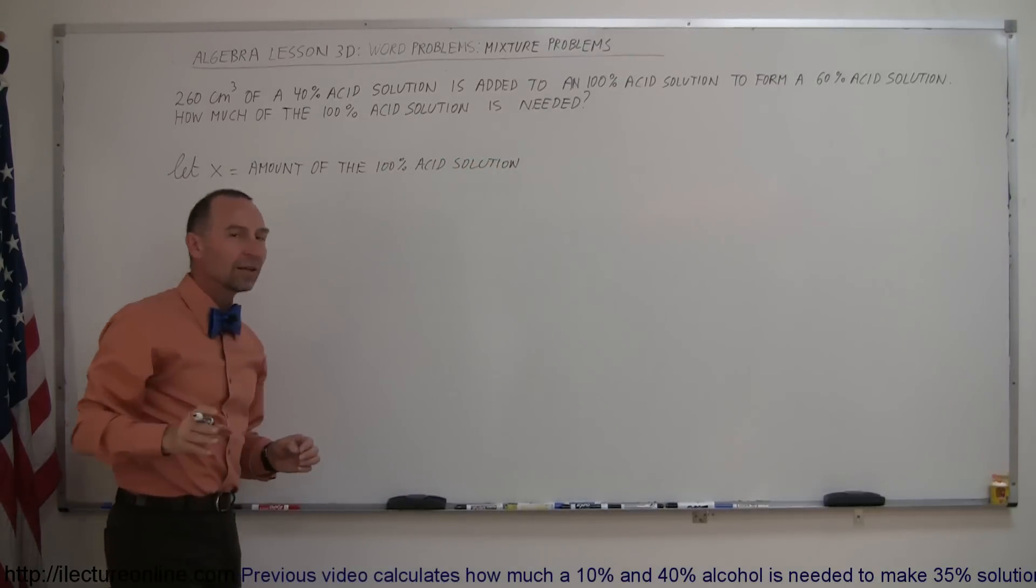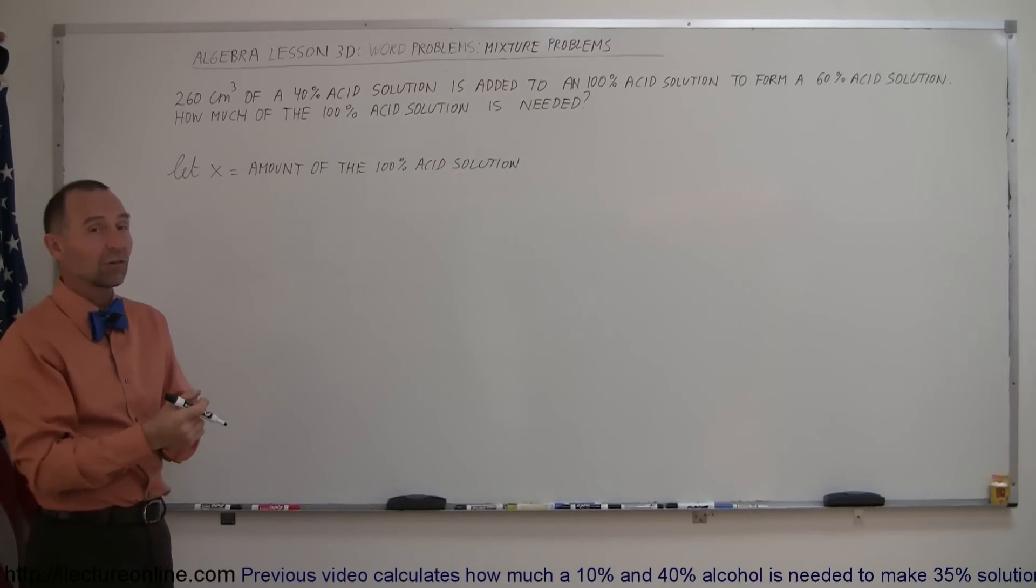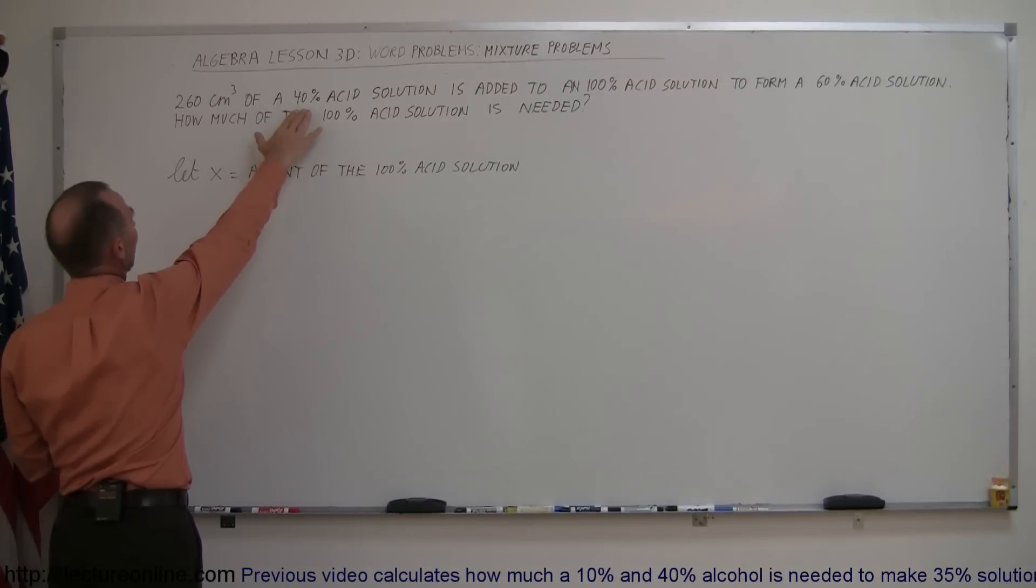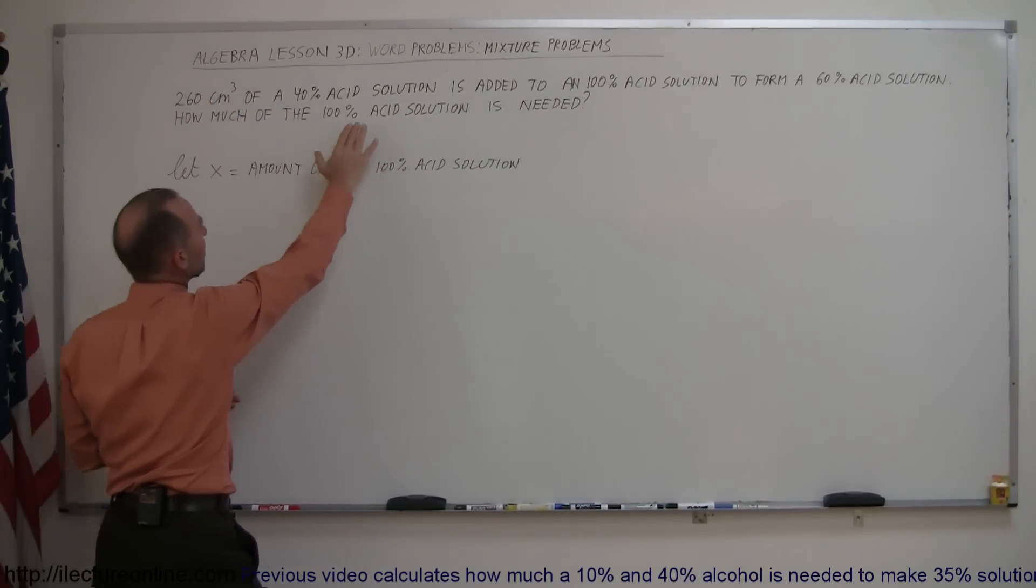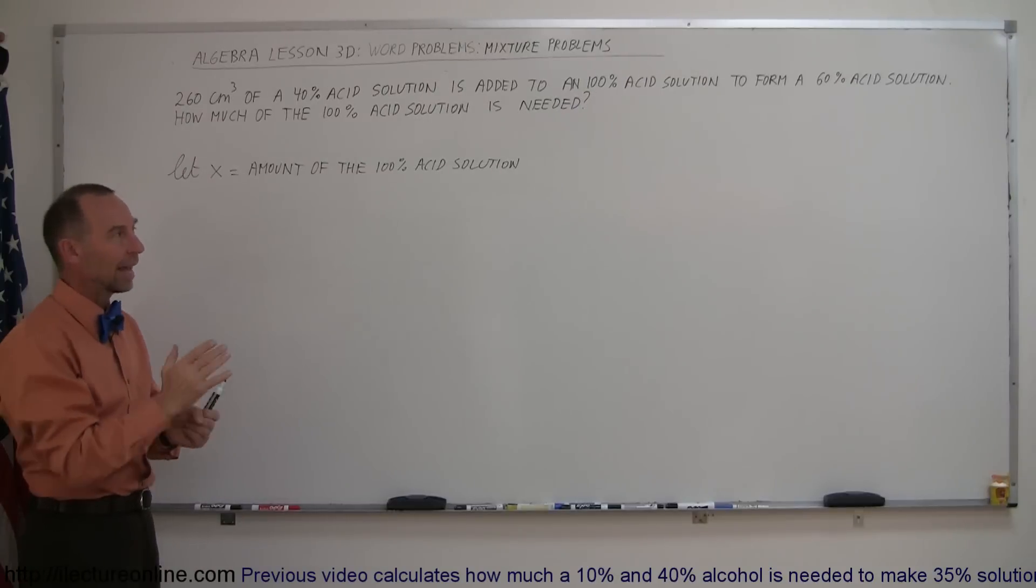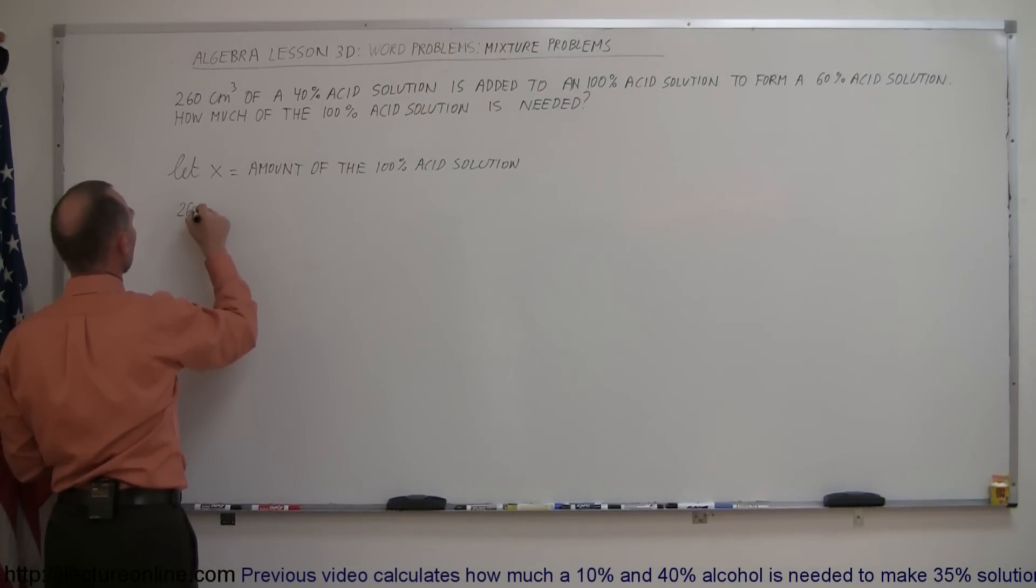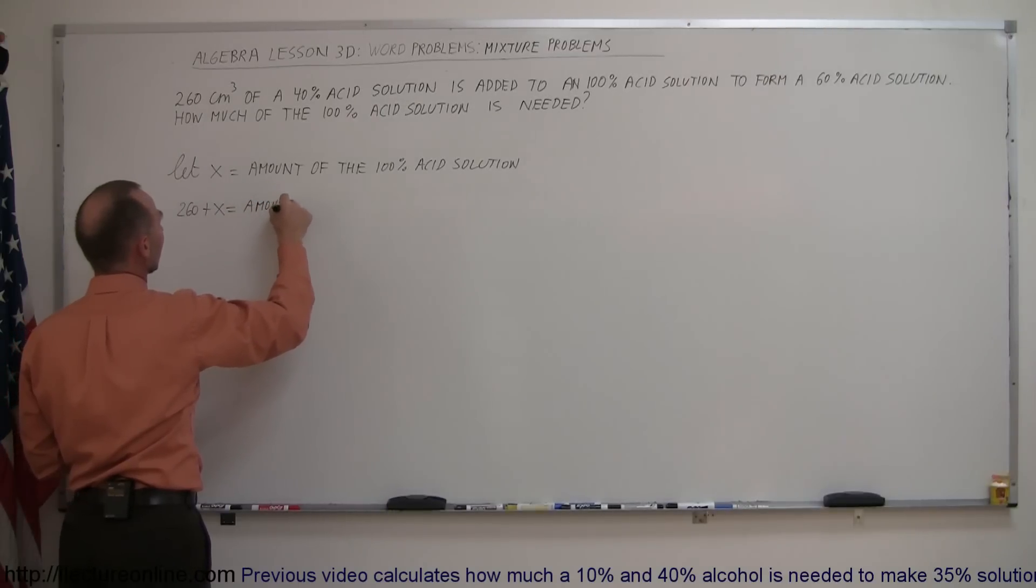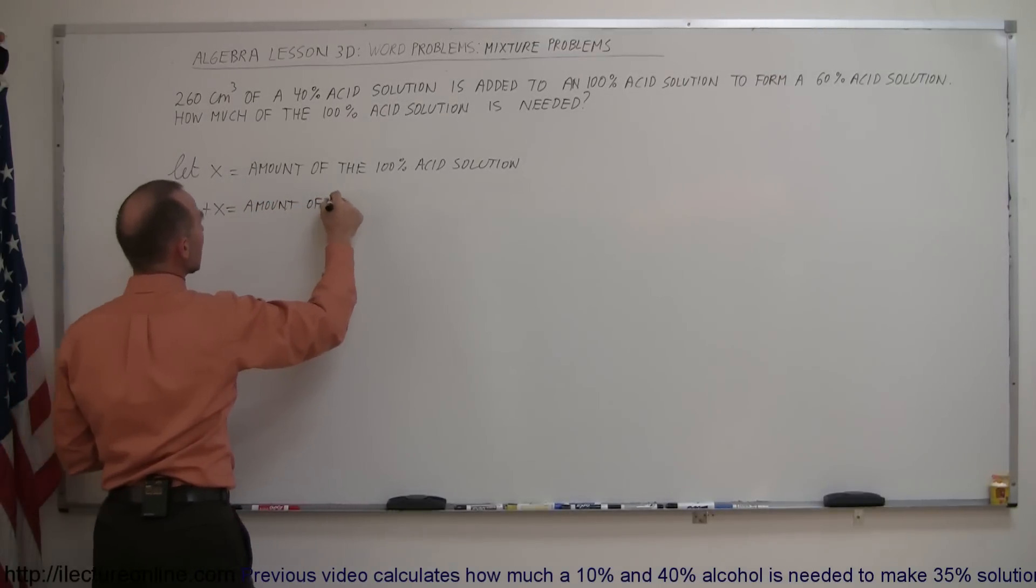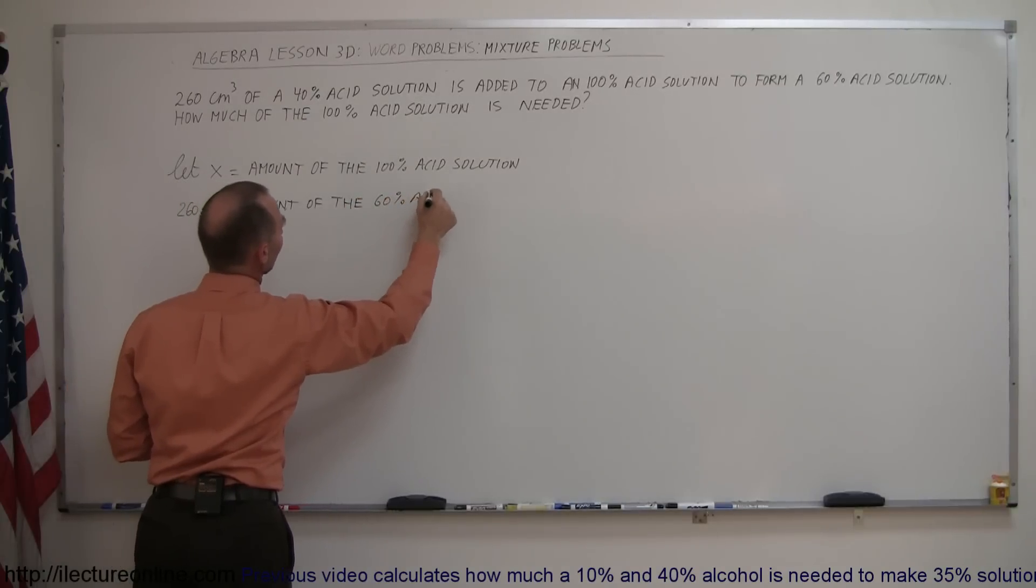Since they don't tell us how much of the total solution we end up with, they just tell us it's a 60% acid solution but not how much, we can assume that the amount of the 40% acid solution, which is given, plus the amount of the 100% acid solution, which we assume to be X, together add up to the total amount of solution. So we can say that 260 plus X equal the amount of the final, or 60% acid solution.